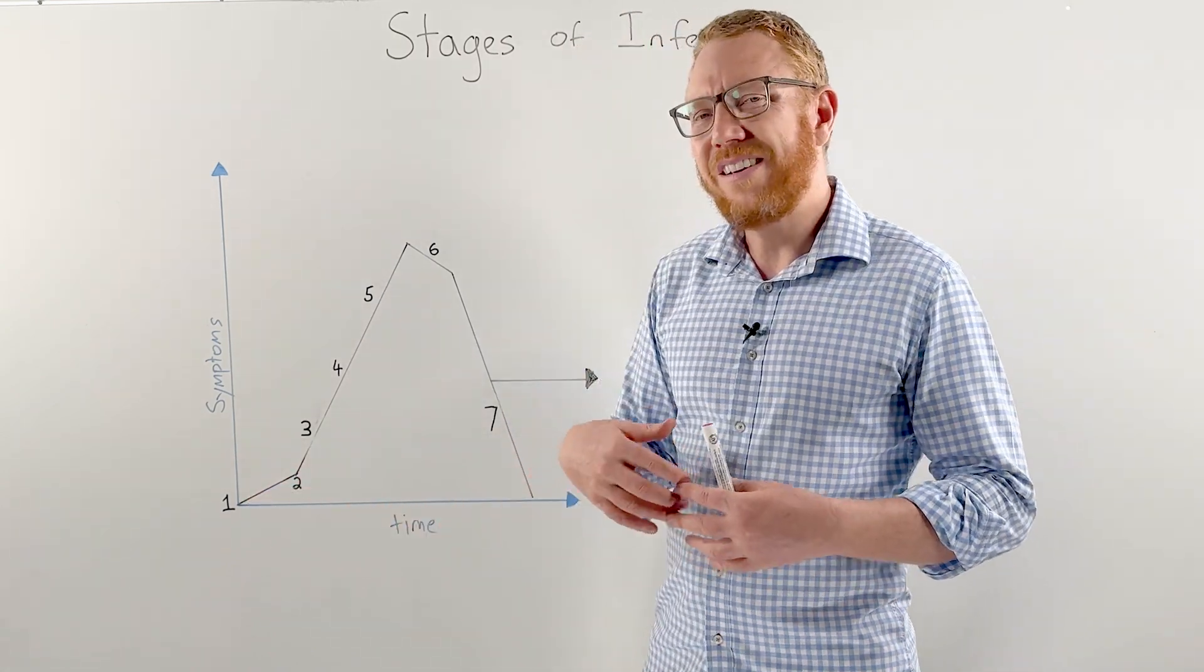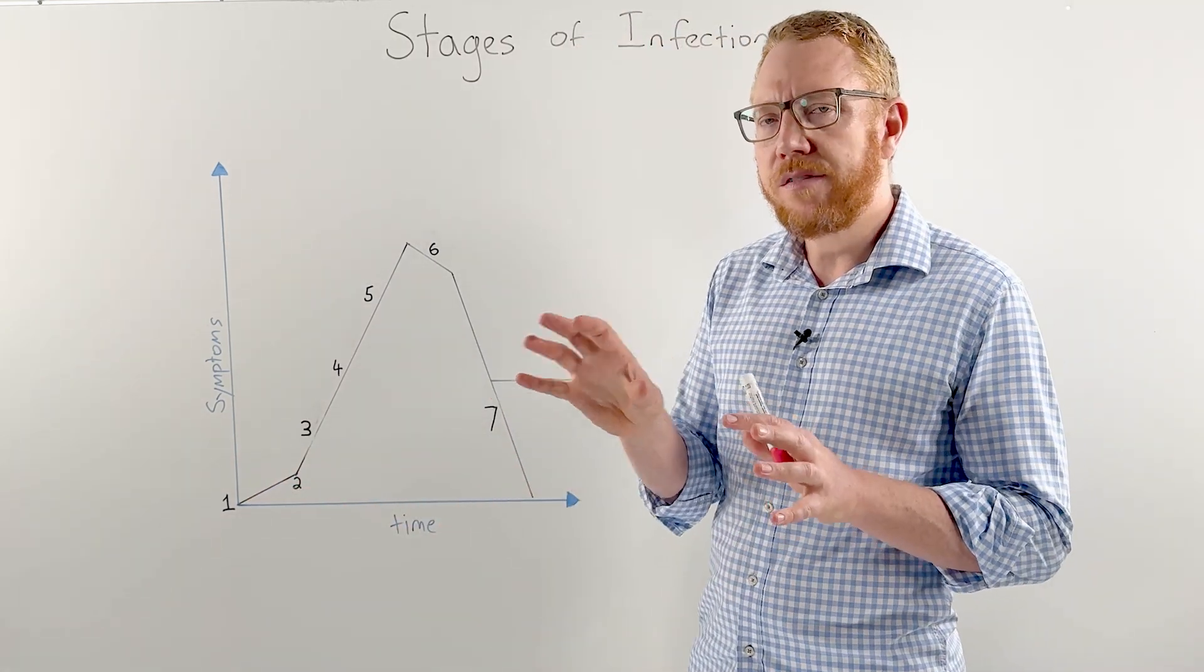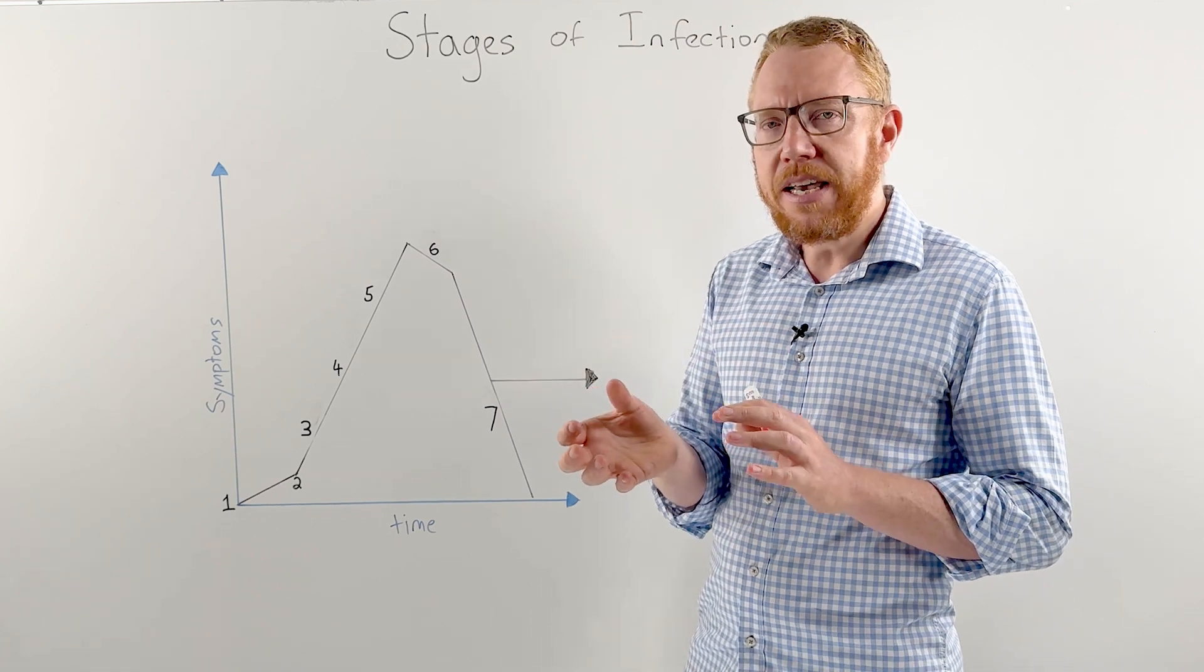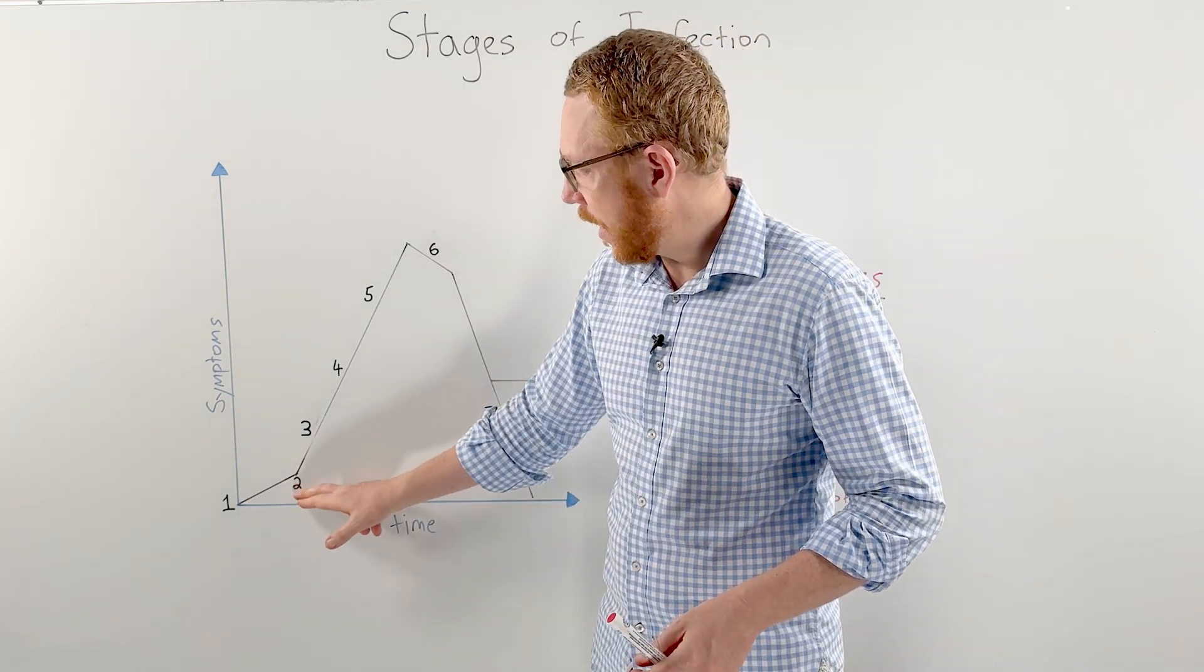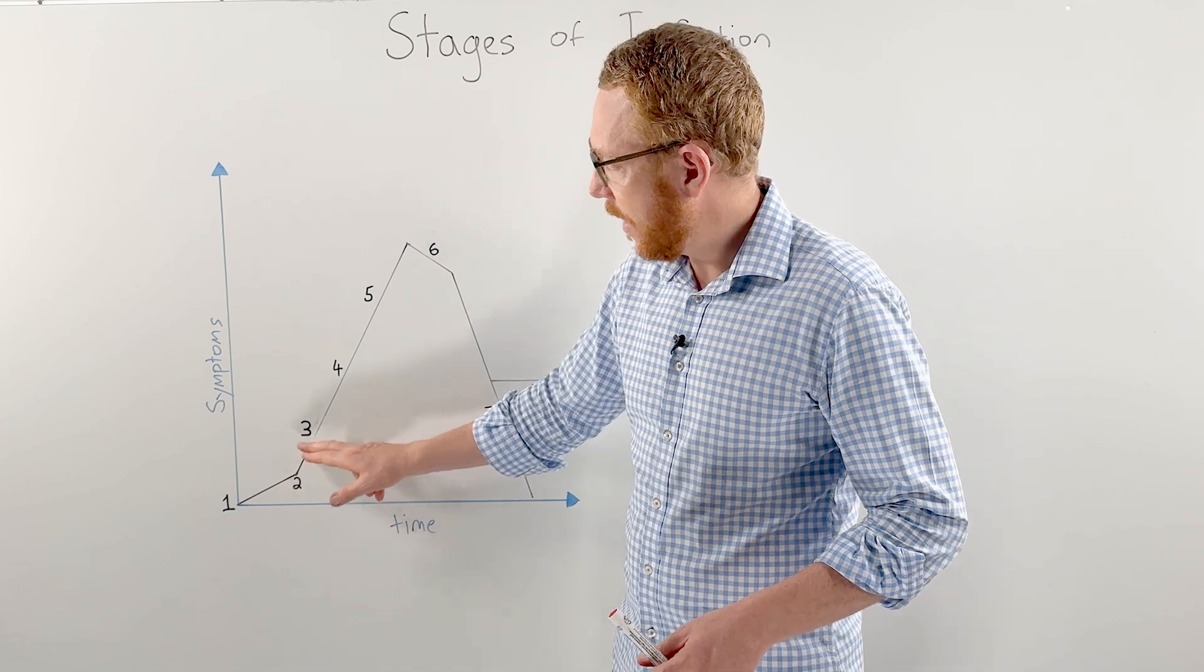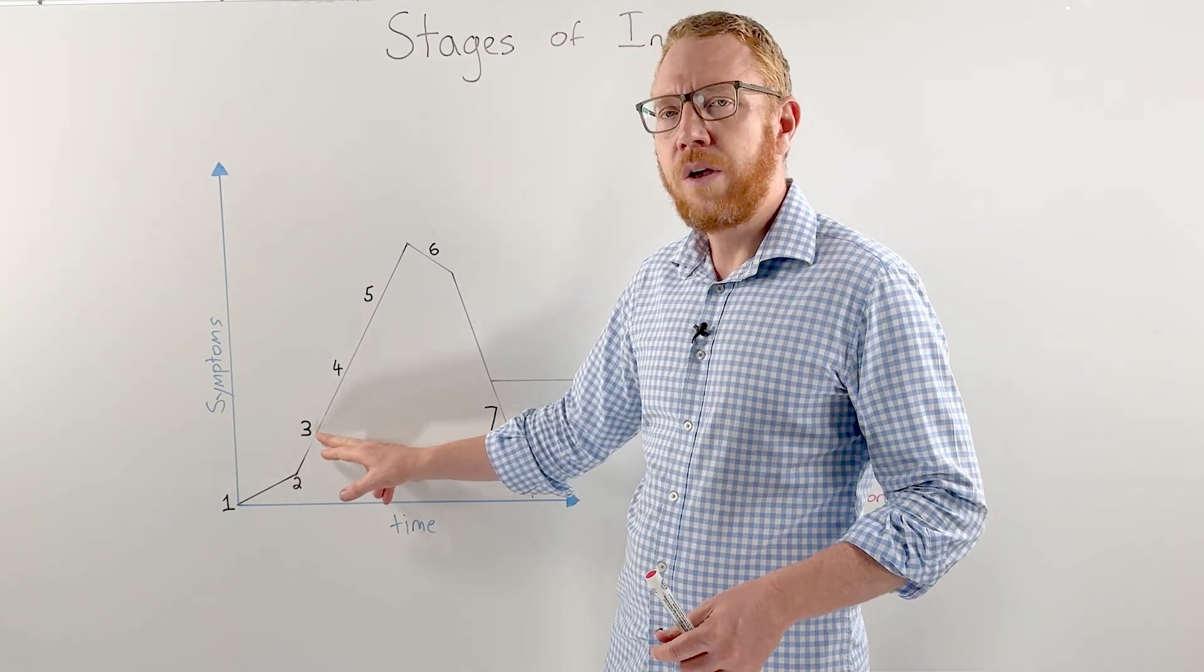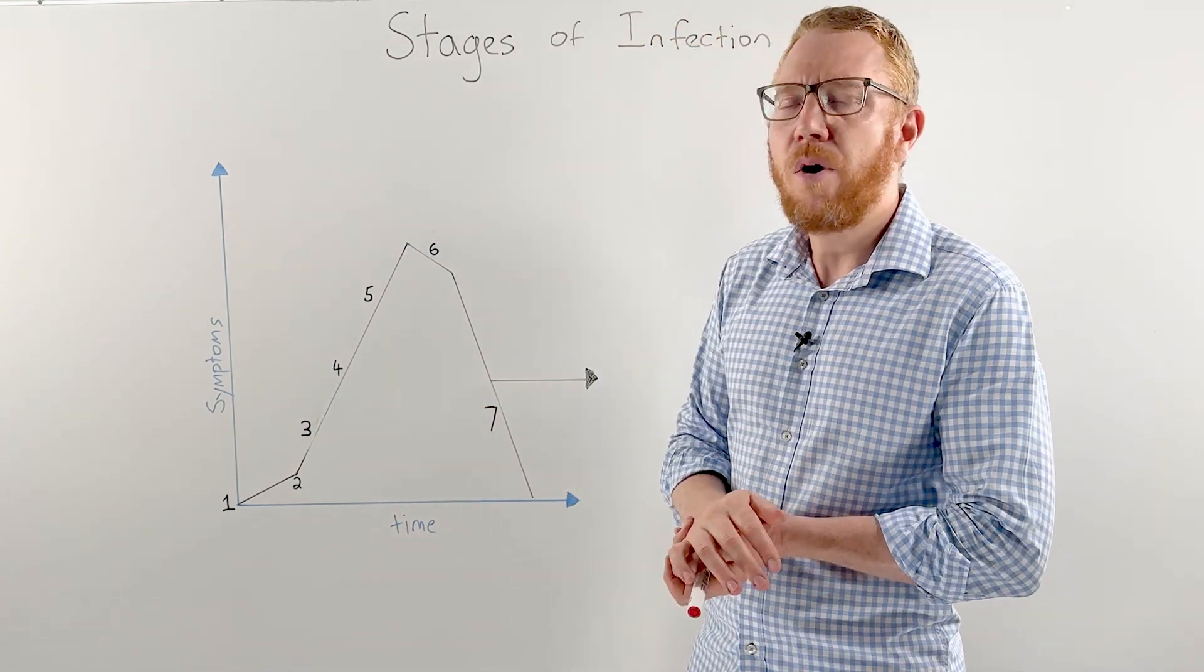Stage two or step two, this is where it needs to evade your immune system. It needs to kind of hide its way out, be sneaky and not be caught. So it needs to evade the immune system. And then at step three, we need to start replicating.